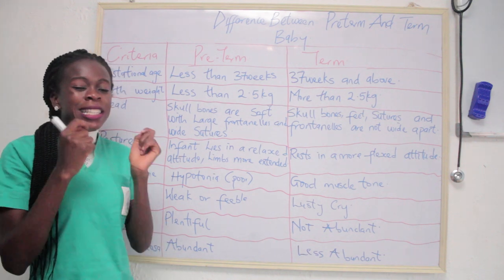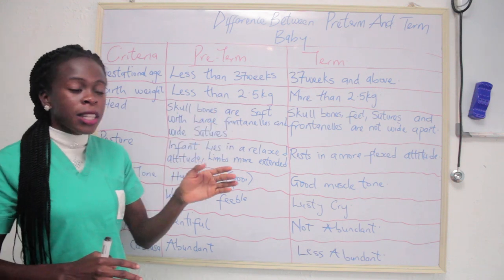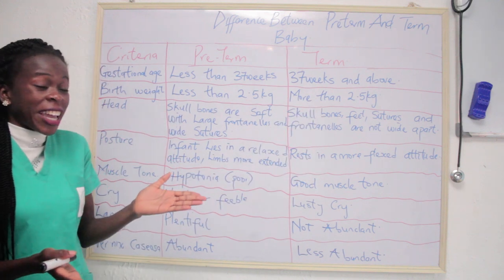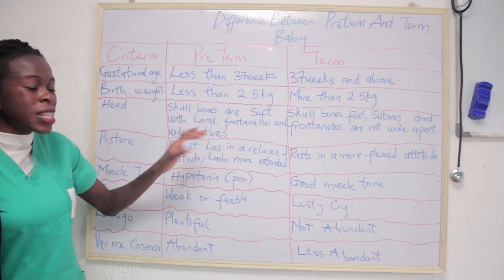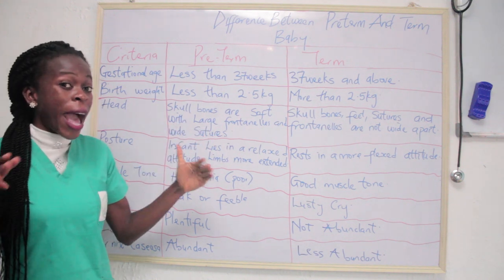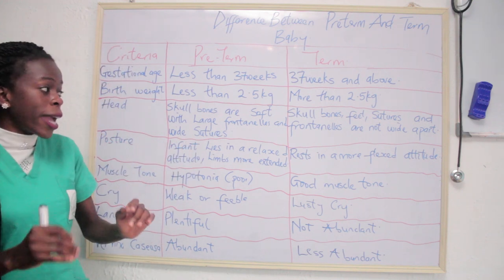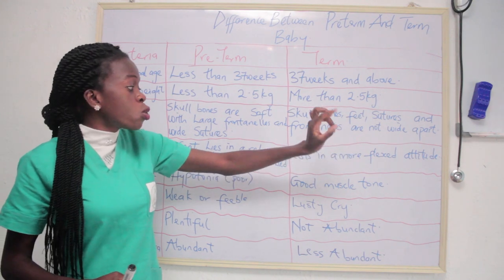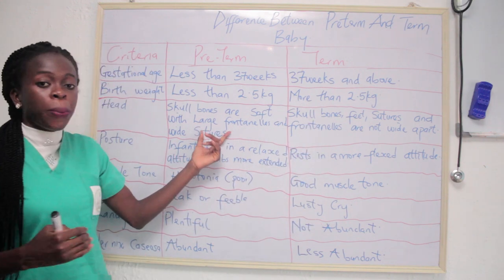For pre-term babies, birth weight is less than 2.5 kg, while for term babies it is more than 2.5 kg and can go up to 3.5 kg. In terms of the head, for pre-term babies the skull bones are very soft with large fontanelles and sutures that are wide — they have not joined together properly. For term babies, the skull bones, fontanelles, and sutures are not wide apart.